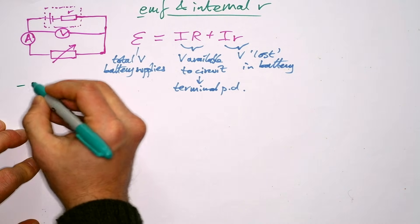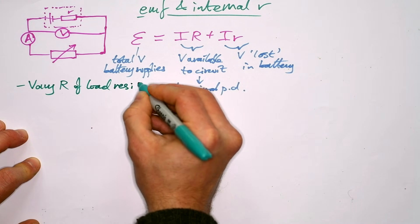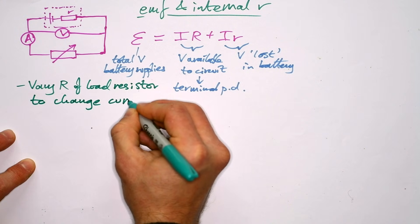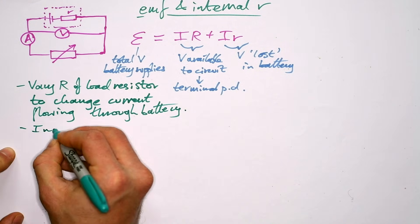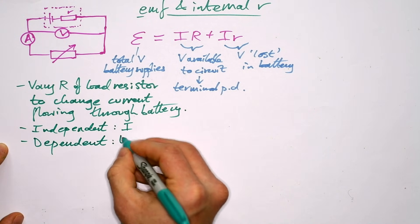So we are going to vary the resistance, and we call that the load resistance, the load resistor, and we want to do that to change the current flowing through the battery. So our independent variable is the current, our dependent, that's our terminal PD.